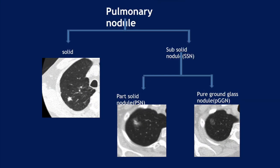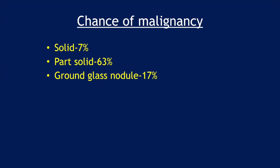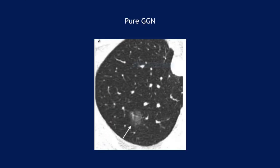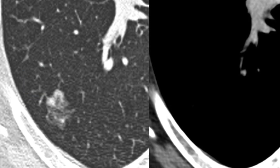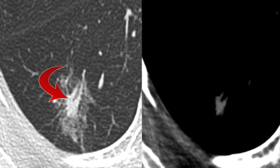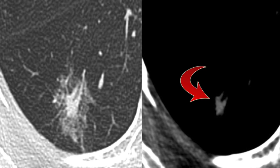So far we have been discussing solid nodules. But there is another group called sub-solid nodules, which are of two types: part-solid nodules and pure ground glass nodules. The risk of malignancy is much greater in sub-solid nodules — solid nodules 7%, part-solid nodules 63%, and ground glass nodules 70%. Here is an example of a pure ground glass nodule, and this is a part-solid nodule with a small solid component that cannot be picked up on the mediastinal window.